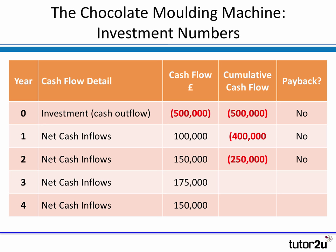What happens in year three? Well, the inflows are getting bigger, but they're not quite enough yet to repay the initial investment. An inflow in year three of £175,000 means that our cumulative or running total has fallen, and it's now only minus £75,000. We're almost at payback, but not quite.